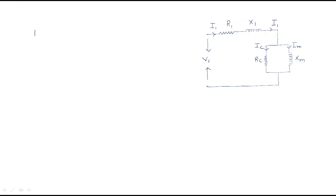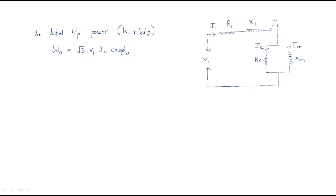For the calculations: the total input power applied to the induction motor under no-load is denoted as W0. W0 equals root-3 times V1 times I-naught times cos-phi-naught. This is also equal to W1 plus W2, the sum of the two wattmeter readings. V1 is the applied voltage and I-naught is the no-load input current — I1 and I-naught are the same here.